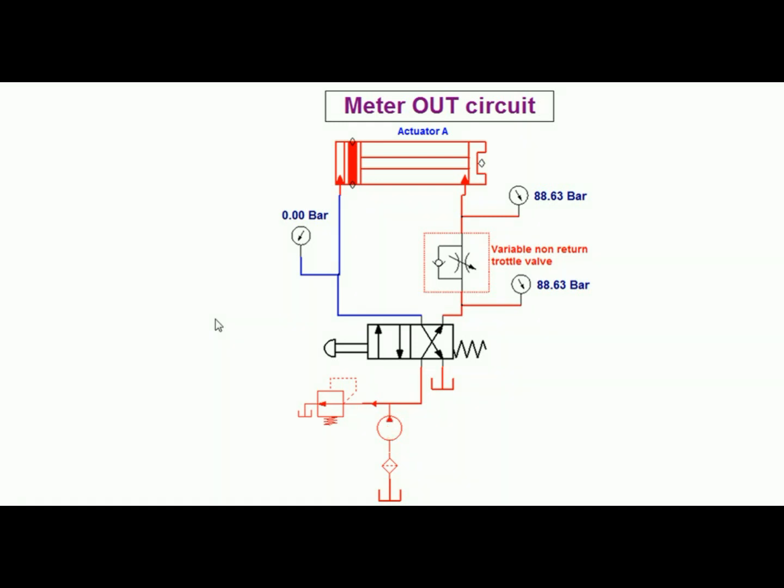Pressure intensification occurs on the rod side when the meter out operation is carried out without a load on the rod side of the cylinder and can result in failure of the rod seals.